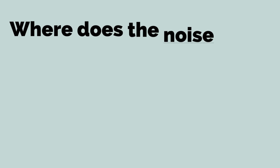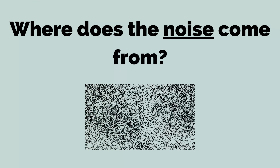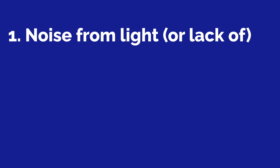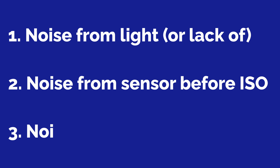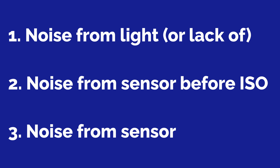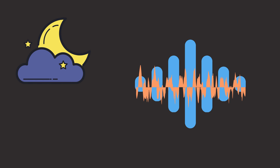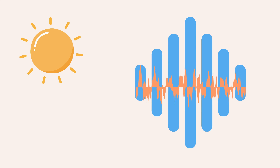Before we try to figure out how to deal with noise, let's talk about where noise actually comes from and what gear has to do with it. Noise has three main sources: one is noise from the light source or lack thereof; the second is noise from sensor electronics before the ISO is applied; and the third is noise from sensor electronics after the ISO is applied. Extra light has the ability to drown out any of this noise by increasing the signal-to-noise ratio.